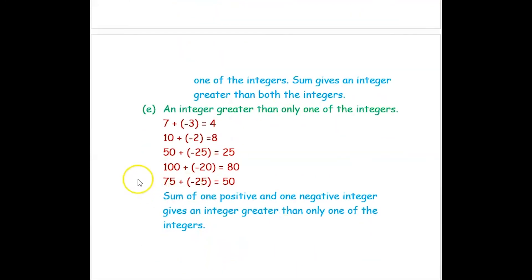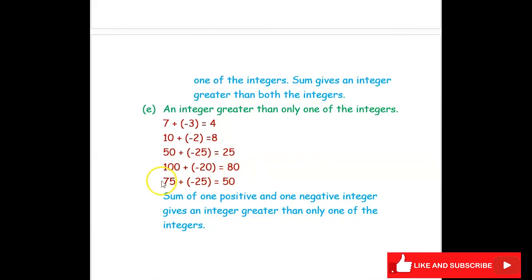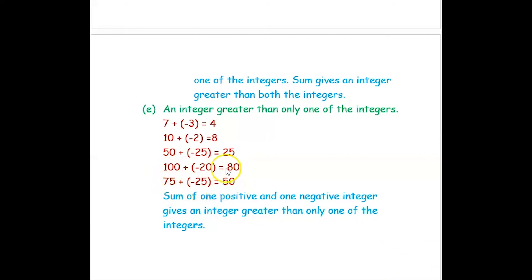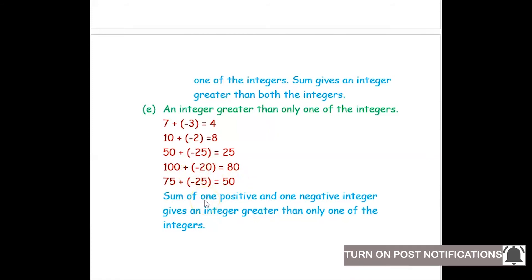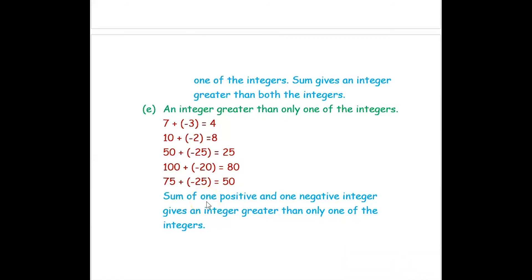The next question is to find two integers such that the answer is greater than only one integer. Using the same examples: 7 plus negative 3 equals 4; 10 plus negative 2 equals 8; 50 plus negative 25 equals 25; 100 plus negative 20 equals 80; and 75 plus negative 25 equals 50. In this case our answer is greater than one of the integers. So if you take one positive and one negative integer and sum them, the result will be greater than one of the integers.